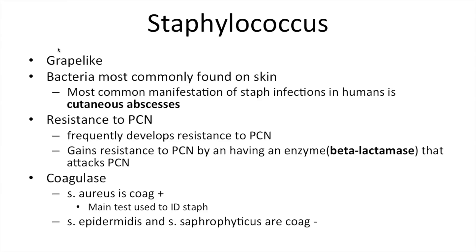A couple of generic descriptors of Staphylococcus: they are grape-like in shape, and it's the bacteria most commonly found on skin. The most common manifestation of Staph infections in humans is a cutaneous abscess. It frequently develops resistance to penicillin by producing an enzyme called beta-lactamase that attacks penicillin — that's the main mechanism of penicillin resistance. Staph aureus is coagulase positive, and the other two Staph species are coagulase negative.